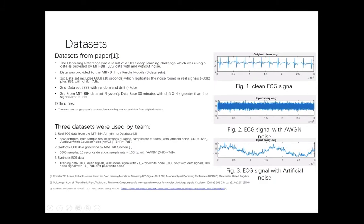The database we use is the same as the paper. We have three databases. The first one is the real ECG state from the MIT database. The second one is the simulated ECG state generated by the MATLAB function, and we also add some white noise in this database. The third database is also the simulation clean signal we made from MATLAB, and we will also add some drift noise on this database. And we can see here, this is the original clean ECG signal we have from the MIT database. And we add some white noise on these clean ECG signals. And this is the ECG signal with artificial noise.